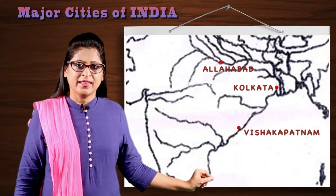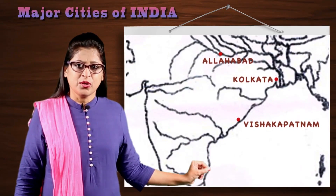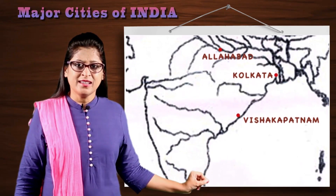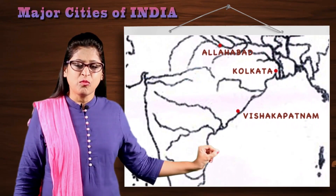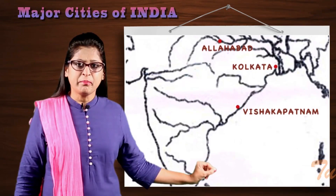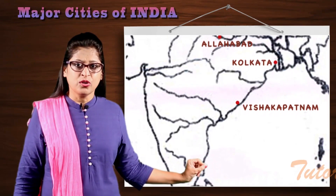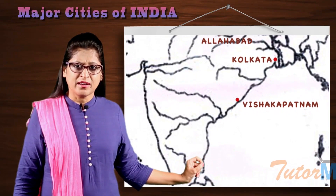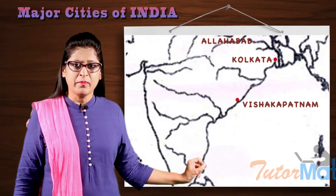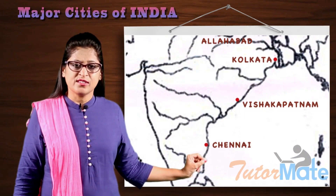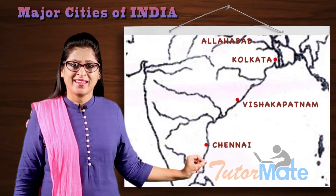Then in the south, you can see there is a small little bump coming out. On that side bump is your Chennai.